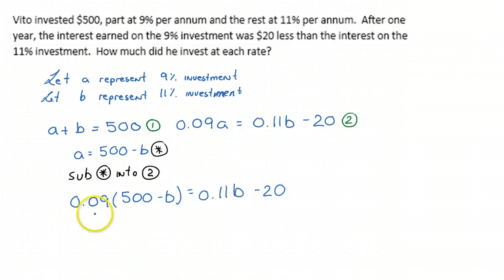And now this just turns into a little bit of algebra. So 45 minus 0.09B equals 0.11B minus 20. And we can do some rearranging here, and we're going to get 65 is equal to 0.2B. That's just with a little bit of algebra. And therefore, B is equal to $325.